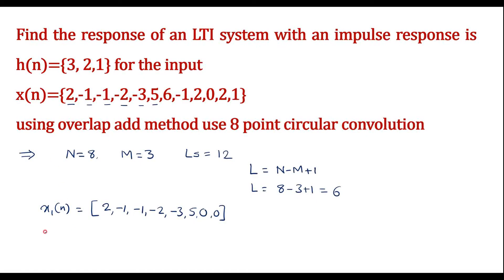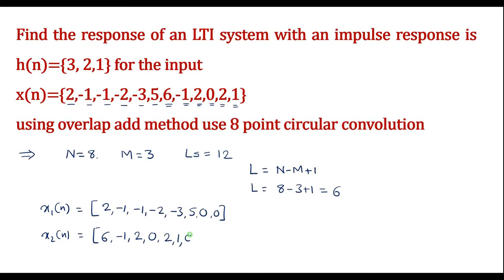Again we divide x(n) into another block x2(n), consisting of the next 6 samples of x(n). The first 6 samples were already considered, so now I take the next 6: 6, −1, 2, 0, 2, 1, followed by M − 1 = 2 zeros. After 2 blocks all samples of x(n) are considered, so we only have 2 blocks.